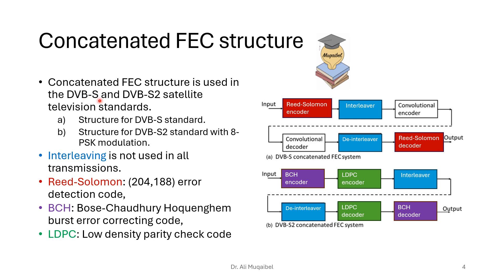A concatenated forward error control FEC structure is used in Digital Video Broadcasting Satellite — either version one or version two — and in the television standard. The newer one also uses 8-PSK. In both standards there is an interleaver, shown in blue, and interleaving is important for burst errors. The interleaver is used between the two concatenated codes to make sure they can augment each other properly and handle both random and burst errors.